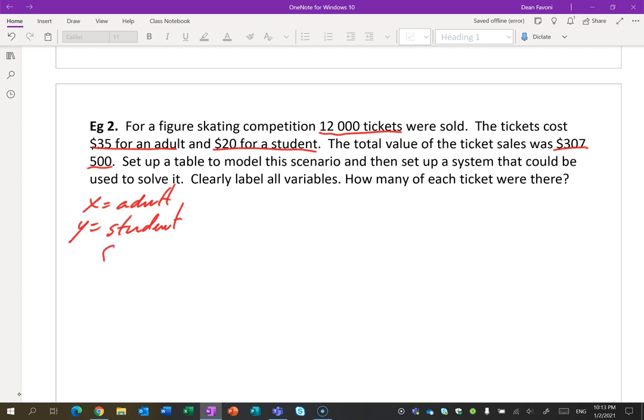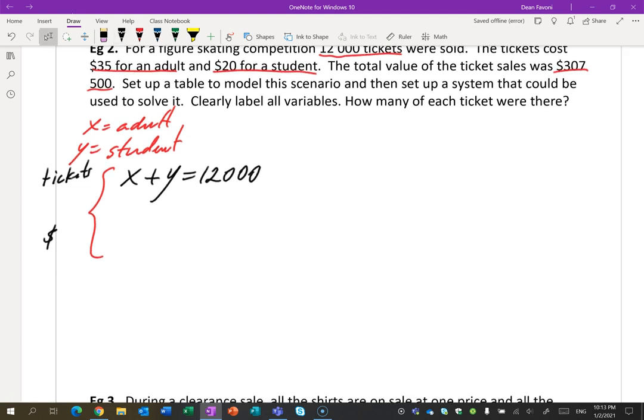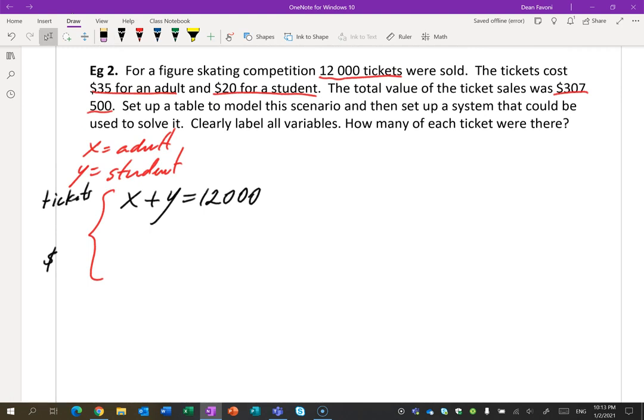So when you're doing questions like this, where you have some money involved, you have tickets, you need to use one line just to talk about tickets and use another line just to talk about money. So if you're talking about tickets, you sold 12,000. Well, it's just this: X plus Y equals 12,000. You have so many adults and so many students, you end up with 12,000 people. So this one now is different. This is the value, this is money. $35 for every adult plus $20 for every student will give you $307,500.